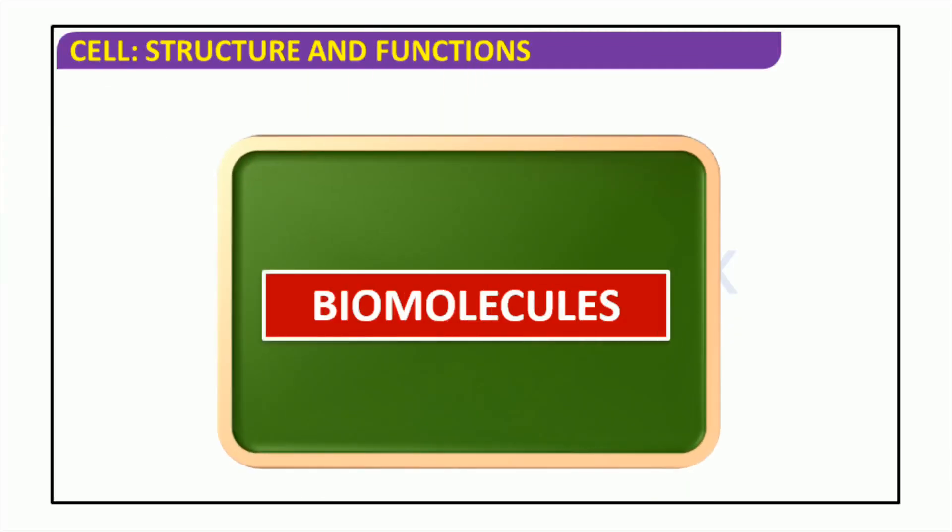Welcome everyone. Today we are discussing the chemical and physical properties of biological compounds, specifically amino acids and methane, and how these properties are influenced by their substituent groups. Let's dive in and explore the fascinating world of biology and chemistry.